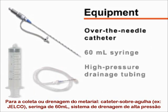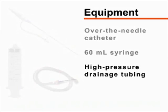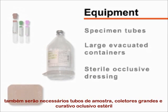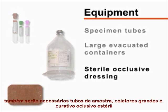For collection of ascitic fluid, you will need an over-the-needle catheter device, a 60 milliliter syringe, and high-pressure drainage tubing. You will also need specimen tubes, large evacuated containers, and a sterile occlusive dressing.